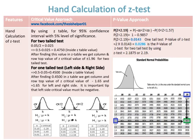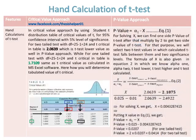The hand calculation of the p-value approach for the z-test gives a probability value of 0.0286 for the two-tailed test. A diagram shows how to find values in the z-table for negative and positive cumulative areas under the standard normal curve. For the t-test critical value approach using the Student's t-distribution table at the 95% confidence interval with five percent level of significance, for a two-tailed test with degree of freedom equal to 25 minus 1 equal to 24, t-critical is 2.0639.